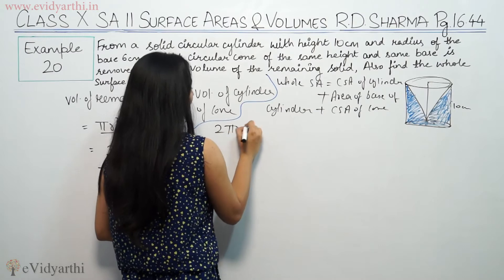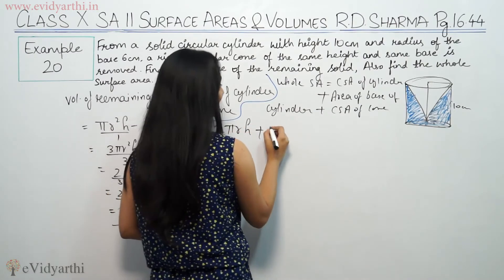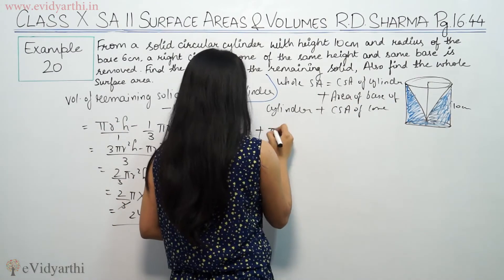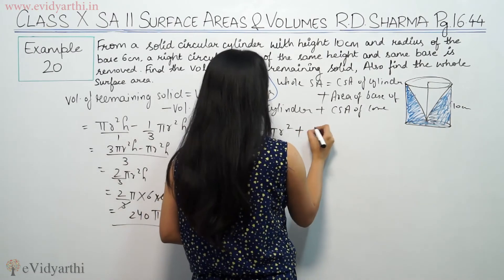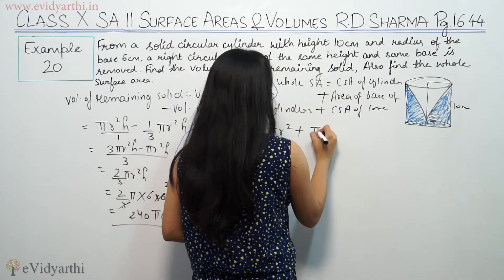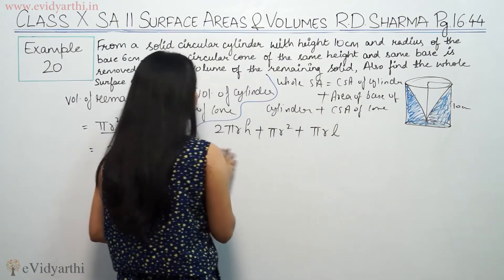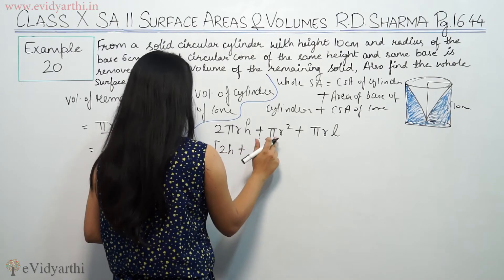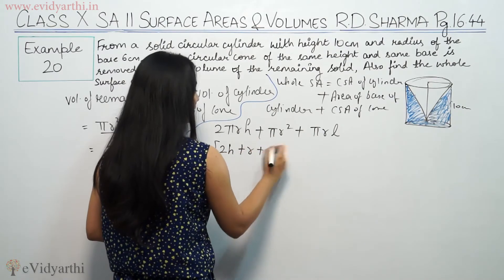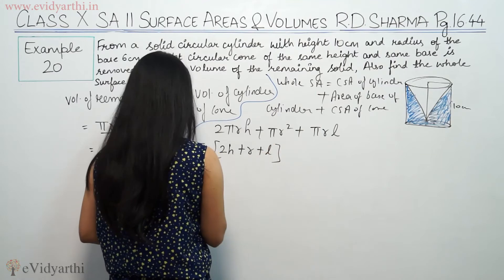Cylinder curved surface area is 2πrh. Base area of cylinder is πr². Cone curved surface area is πrl. Taking π common, we have πr times (2h + r + l).